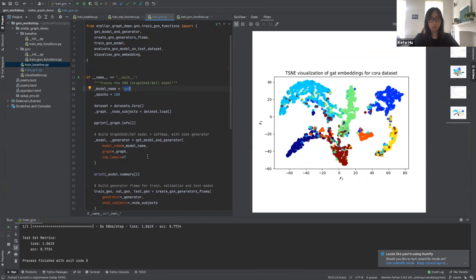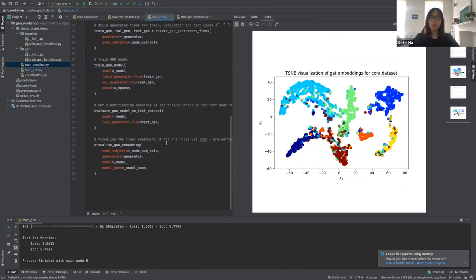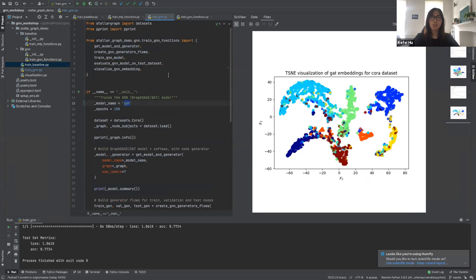Okay, so the test accuracy is 77 percent, which is a significant improvement to the first one. Here is the t-SNE visualization for the Graph Attention Networks embedding. As you can see, there seems to be some clear clusters being formed. It's a pretty good embedding space. Let's try GraphSAGE.